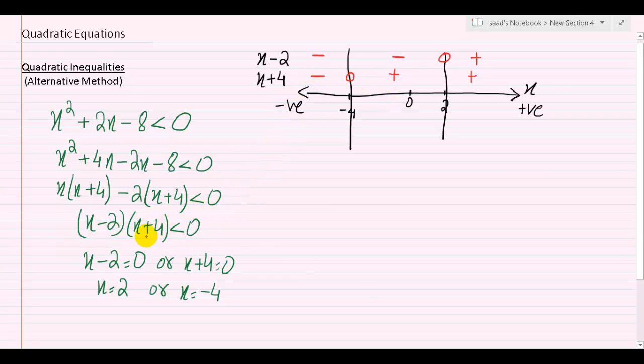Now notice here that these two expressions are being multiplied. So that's exactly what I'm going to do here. I'm going to multiply the two signs that I've got here. Minus minus gives me plus. Minus plus gives me minus. Plus plus gives me plus.